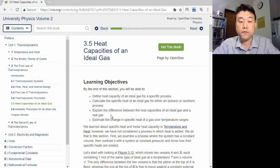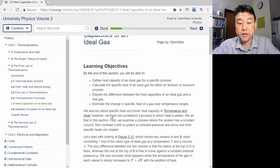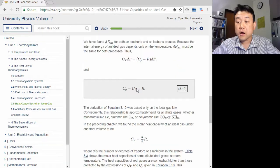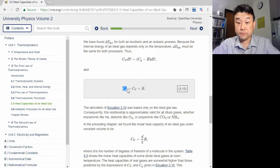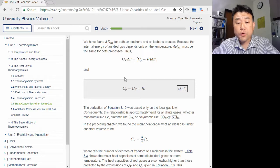For example, heat capacity of gas depends on if the heating occurs under constant volume, that is, no work done, or under constant pressure, that is, some work done.